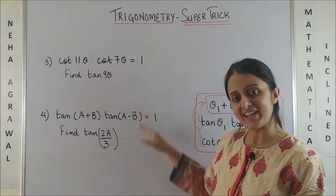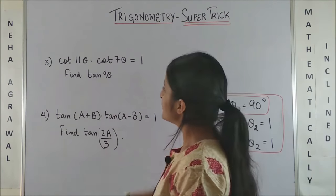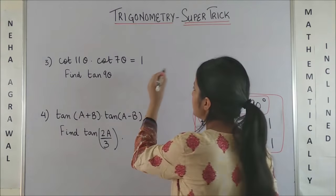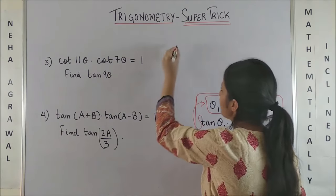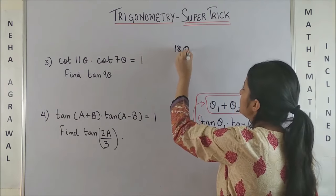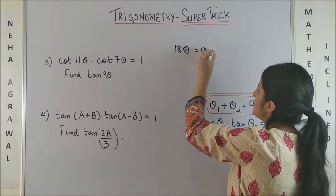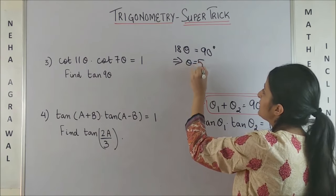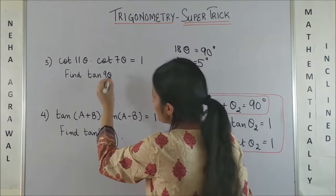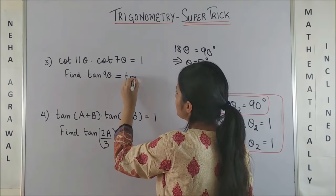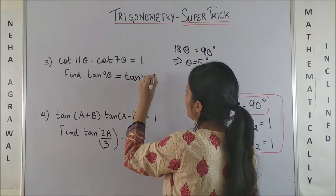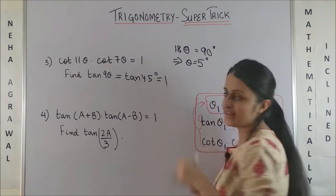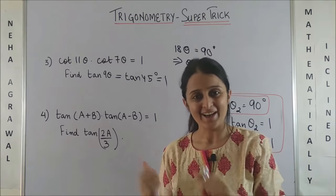Now, going with the same logic for the next 2 questions. So, cot 11θ cot 7θ = 1, that means 11 + 7. So, we are trying to say 18θ = 90°, which means θ would be equal to 5°, which means tan of 9 × 5 - I am trying to ask you what is tan 45° and we all know it is a simple one.